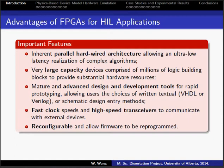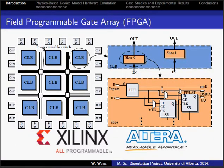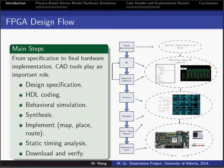An FPGA is typically a two-dimensional symmetrical CLB array. A CLB contains two slices, and each one contains a look-up table and flip-flops. The FPGA design flow begins with design specification and HDL coding; behavioral simulation and synthesis should be performed too. The implementation process contains map, place, and route. Also, static timing analysis should be performed. After all this has been done, the generated bitstream file should be downloaded to the FPGA board and verified.